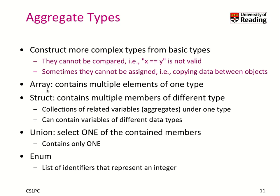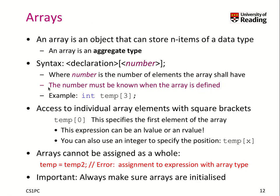There are four aggregate types we will look at. One is the array type, which means you have multiple elements of one type. Then we have a structure, which means we have multiple members of different types. Then we have a union and an enum.